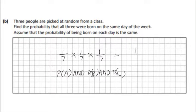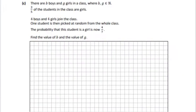So probability of A and the probability of B and the probability of C. All are the same. So it's one over seven to the power of three, which is equal to one over 343. Final part of question one.